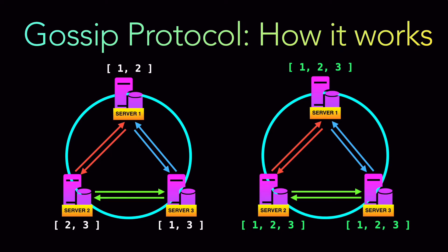So at any point in time, if any server goes down — even if two servers go down — the third server always has the updated information. That is how gossip protocol works: information exchange in a distributed manner, with a continuous process of exchanging information by figuring out peers.